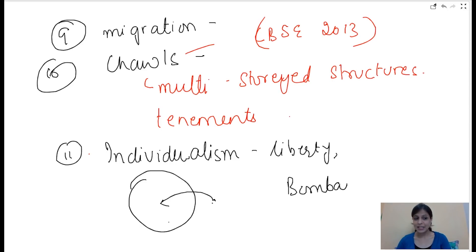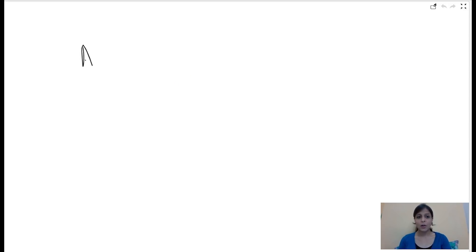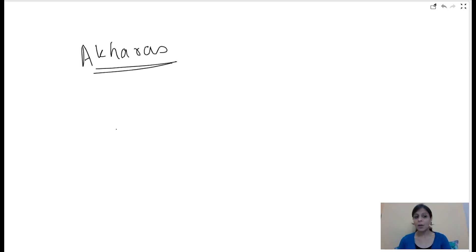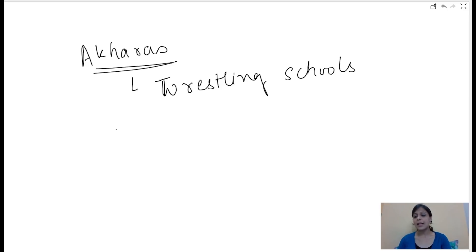What are the three Presidency Cities? The initial cities are Bombay, Bengal, and Madras — these are known as the Presidency Cities. This question was asked in the CBSE 2009 exam. What do you understand by akharas? Akharas are traditional wrestling schools.